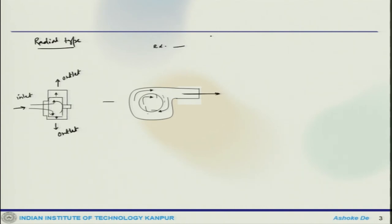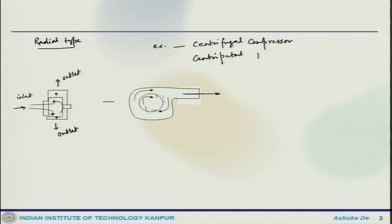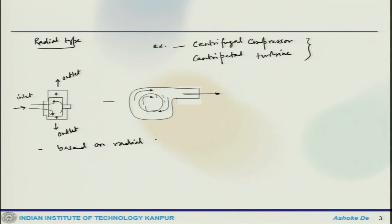Examples of radial type systems include the centrifugal compressor, which is a radial type compressor or radial type turbo machine, and the centripetal turbine, which is another radial type system. For these radial type systems, the turbo machine is based on radial motion of the flow passage.